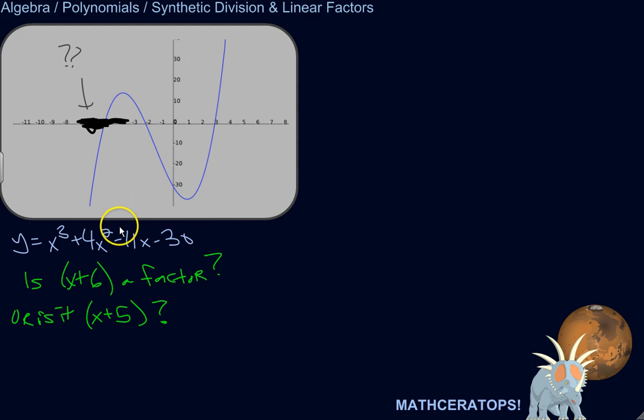The polynomial itself is not linear. It does not form a straight line. It's a curve that looks like this in this case. But it's made up of factors that are linear. If you were to graph them, it would be a straight line. So the question is, is x plus 6 a factor, or is x plus 5 a factor?